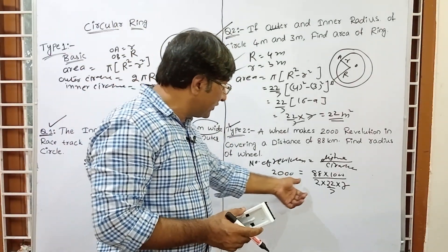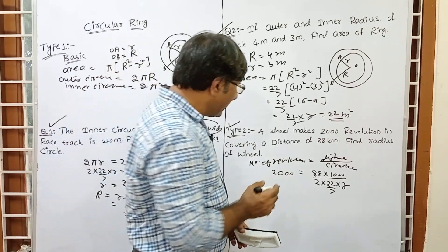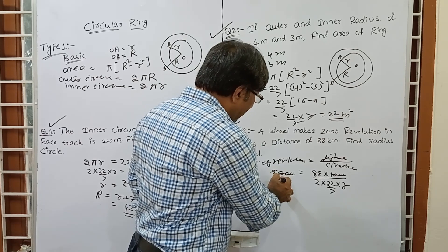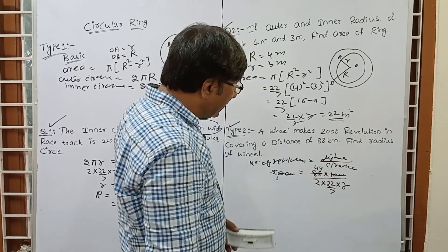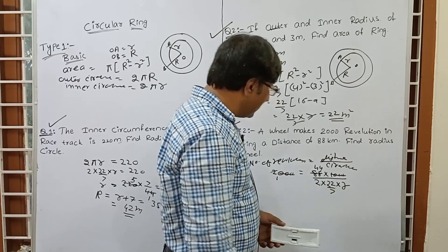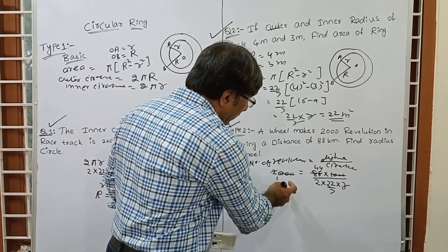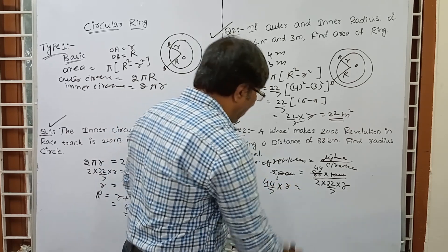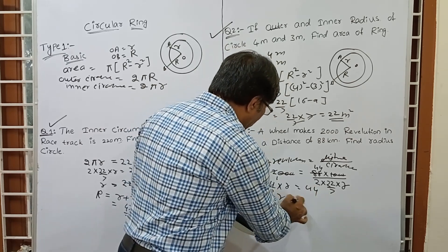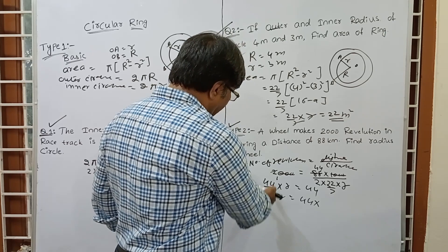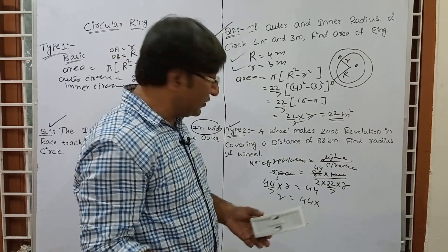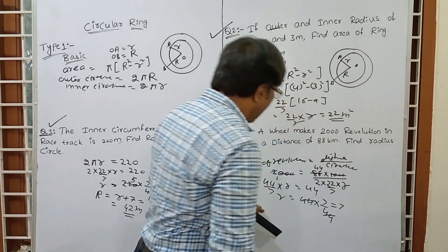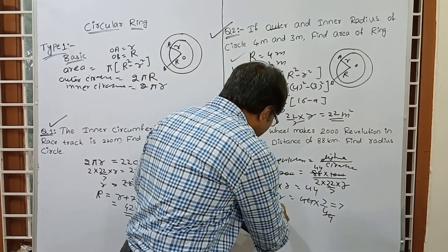The technique for solving this: number of revolutions equals total distance divided by circumference of the wheel. So 2000 equals 88 into 1000 divided by 2 into 22 by 7 into r. Simplify: cancel 1000 by 1000, giving 44 by 7 into r equals 44. So r equals 44 into 7 by 44, which gives r equals 7 metres.